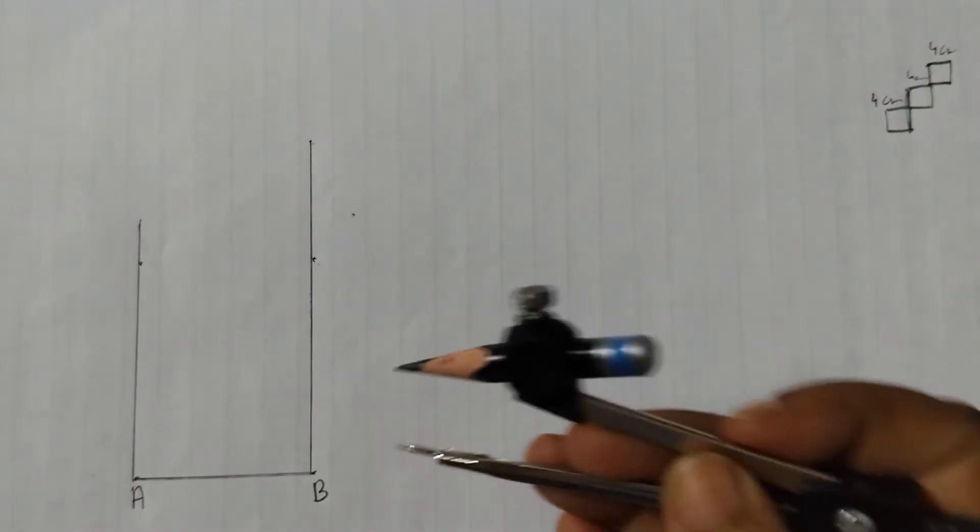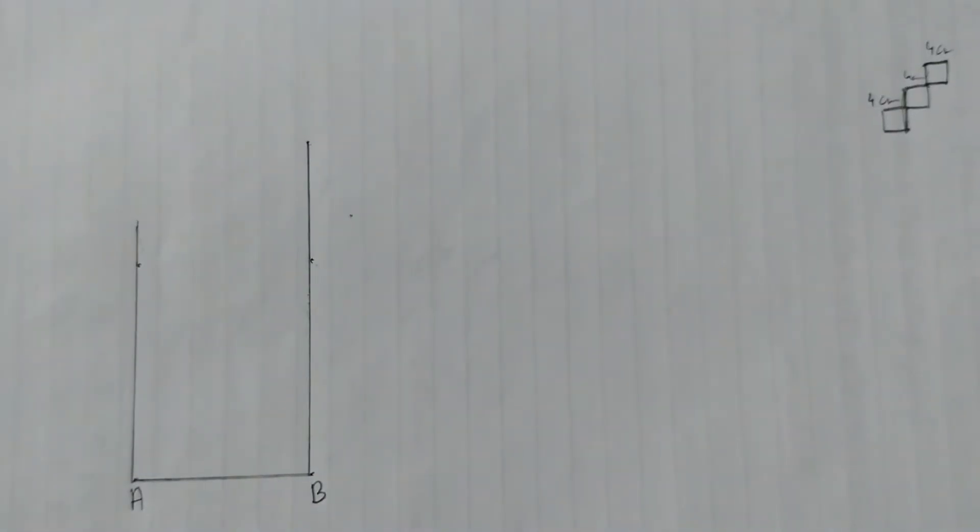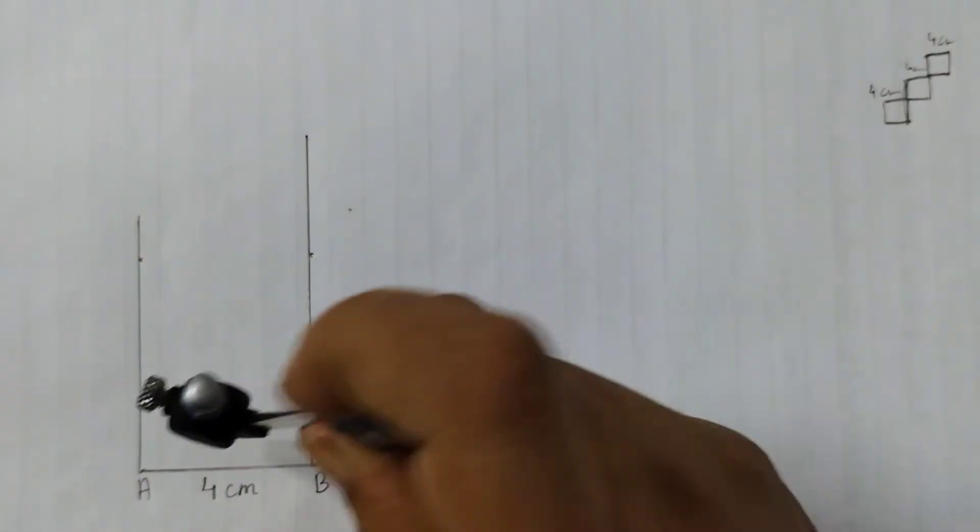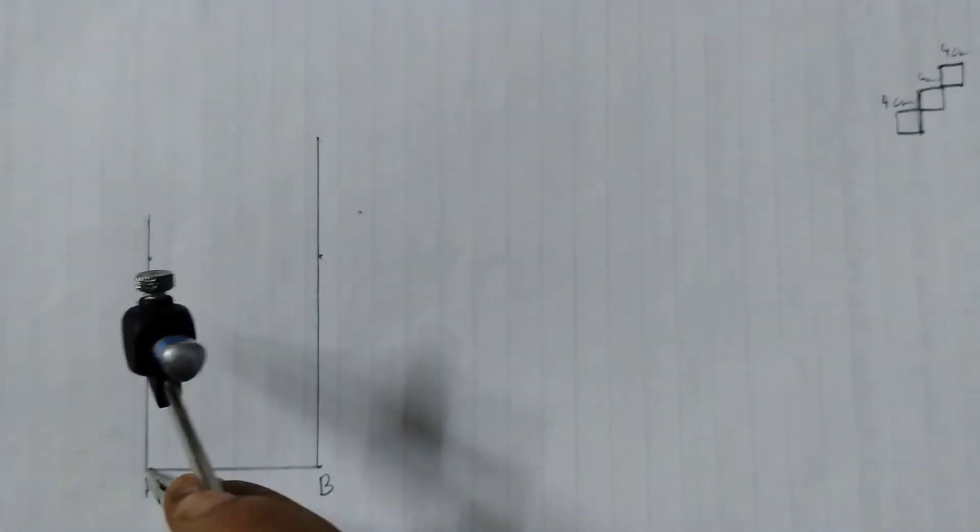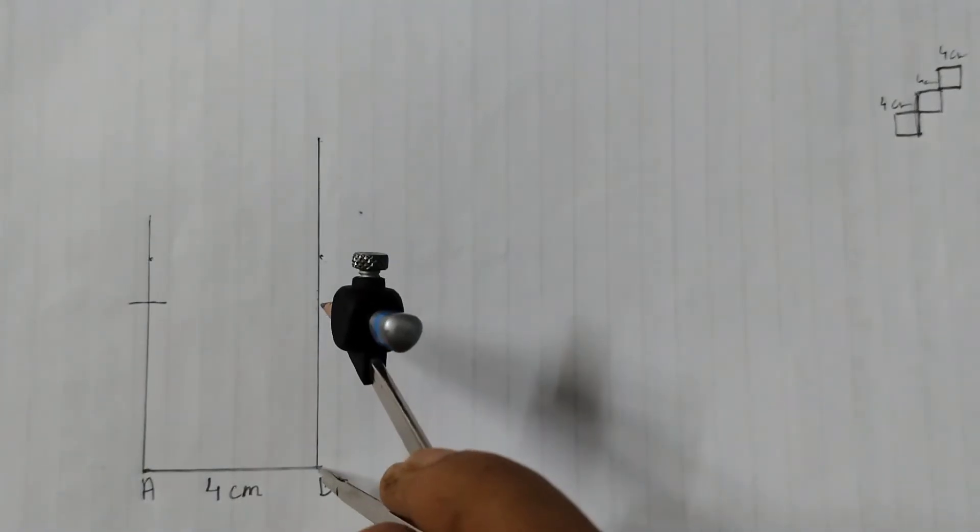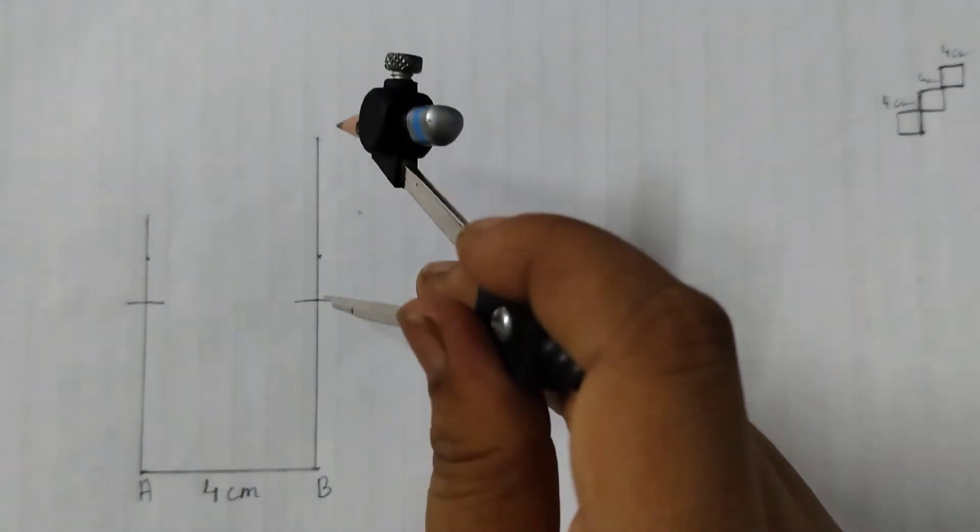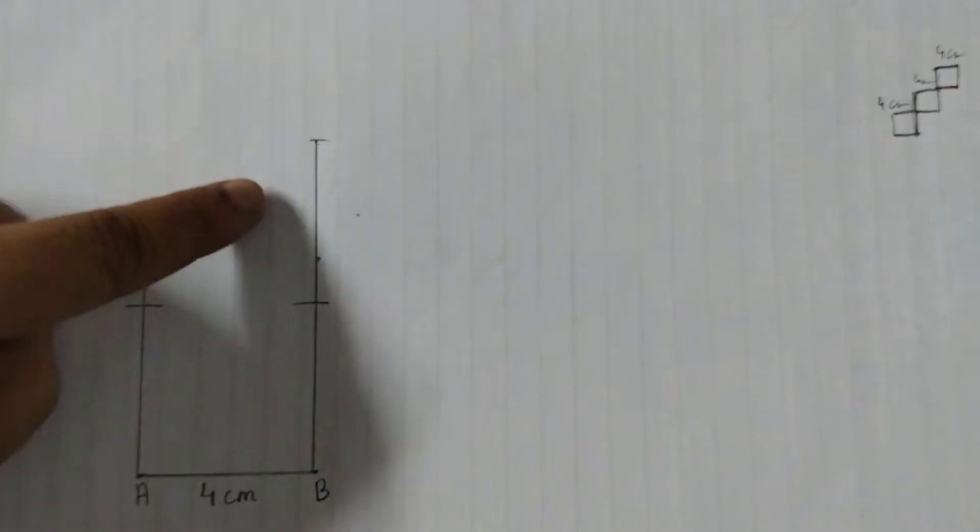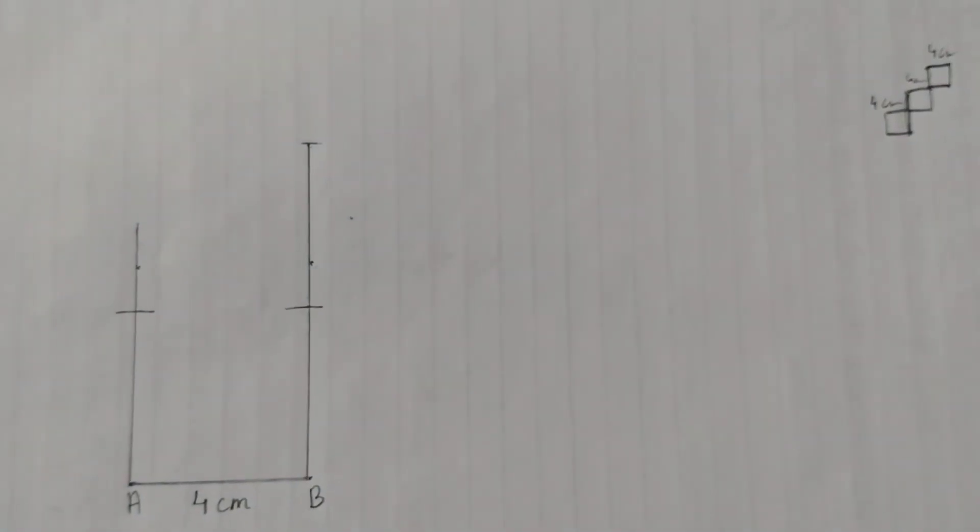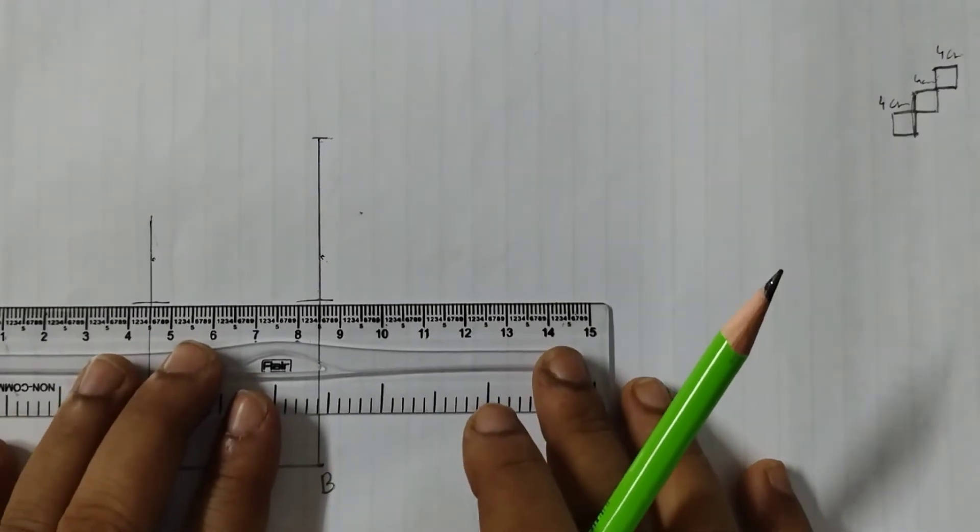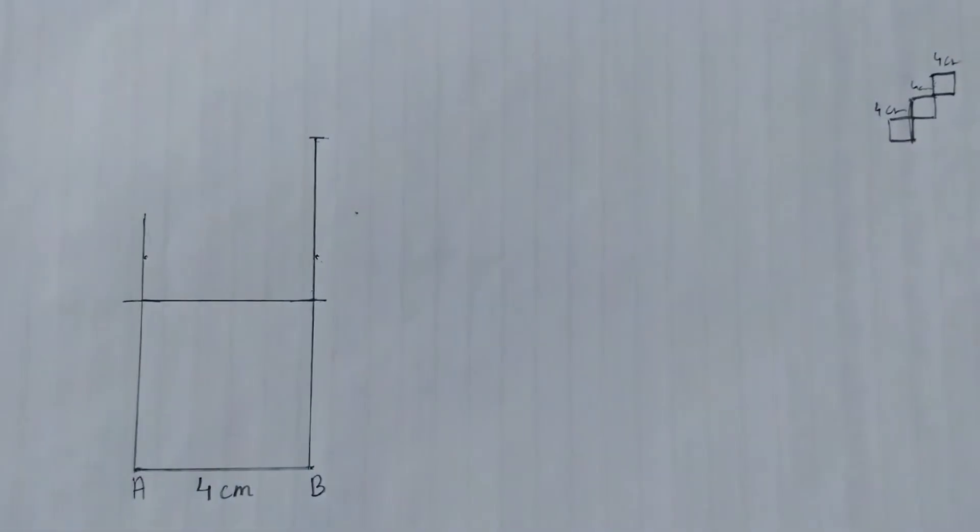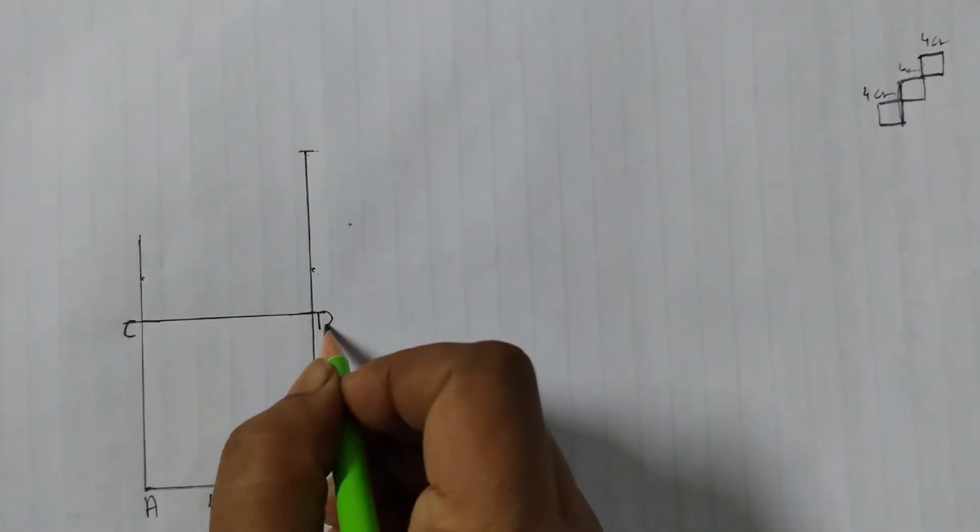Now take a compass and measure this distance. Because this is 4 cm, this length is 4 cm. So I am going to measure this length. Cut an arc here, cut an arc here and cut an arc here. And if you see, this measurement is also 4 cm. See here, 4 cm. Because we took 8 cm in the beginning, so now we are going to join these two points. C and let's say this is D.